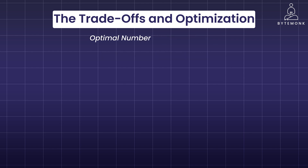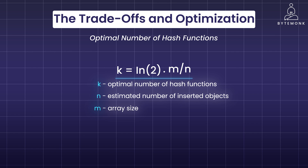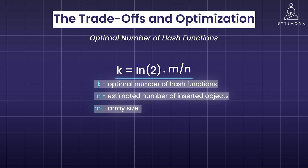The first method is to optimally calculate the number of hash functions. The number of hash functions, denoted as k, plays a pivotal role in the performance and accuracy of a Bloom filter. An optimal k-value balances the trade-off between the set bits in the bit array and the computational demand. Before inserting objects into the Bloom filter, we can find the optimal number of required hash functions k that will minimize the false positive probability, if we know the array size m and can estimate the number of objects n to be inserted. The formula helps find this balance, where k is the optimal number of hash functions, n is the estimated number of inserted objects, and m is the array size.